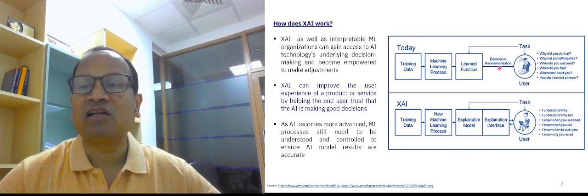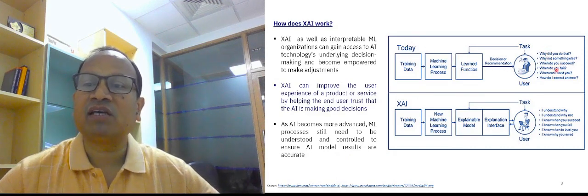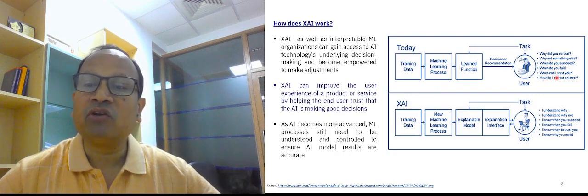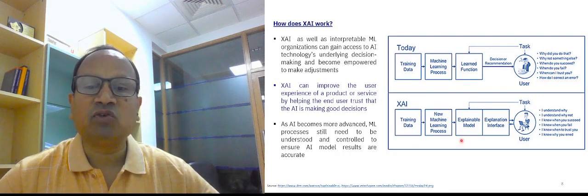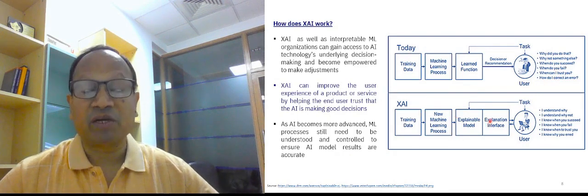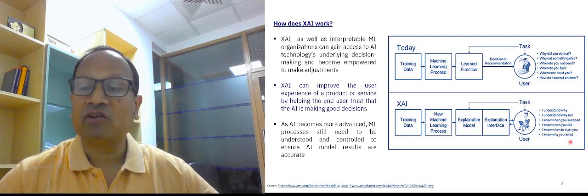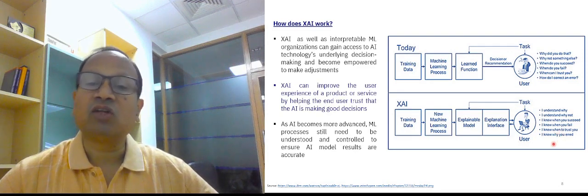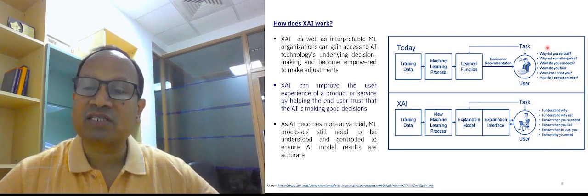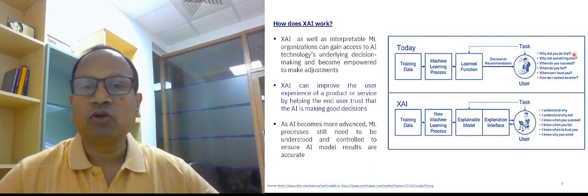So in general ML model, as you can see, why did you do that? Why not something else? When do you succeed? When do you fail? But in XAI model, you have new ML processes. Explainable model. Explainable interface. I understand why. I understand why not. I know when you succeed. When you fail. I know when you trust. I know when you entered. So these responses, which are the genuine queries, the responses created in the XAI model.